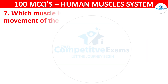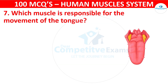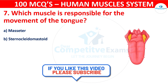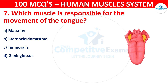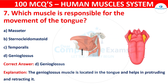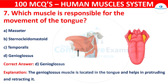Question number seven: Which muscle is responsible for the movement of the tongue? Your options are: Masseter, Sternocleidomastoid, Temporalis, or Genioglossus. The correct answer is D, that is genioglossus. The genioglossus muscle is located in the tongue and helps in protruding and retracting it.